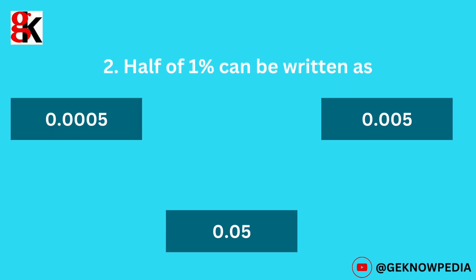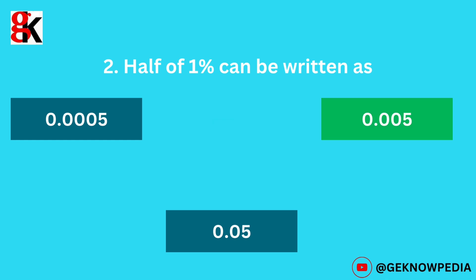Second question. Half of 1% can be written as: 0.0005, 0.005, or 0.05. The correct answer is 0.005.